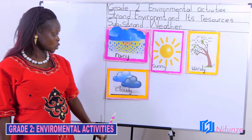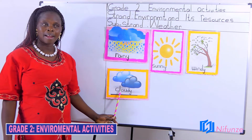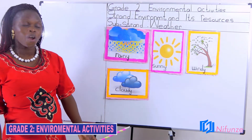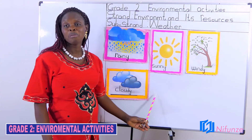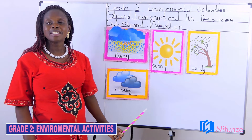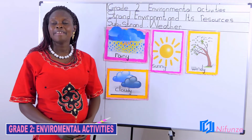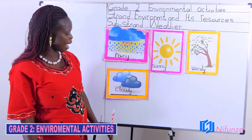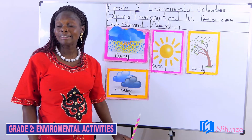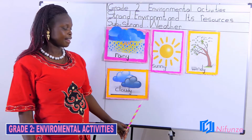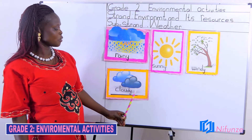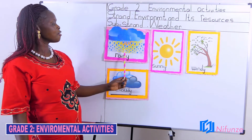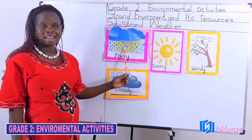We can also have a cloudy weather. We see clouds, or we say the weather is cloudy, when it is almost about to rain. There are those clouds that look like this picture of mine here, and they are dark gray. When they are like that, it rains. So this cloudy weather appears before the rain falls.